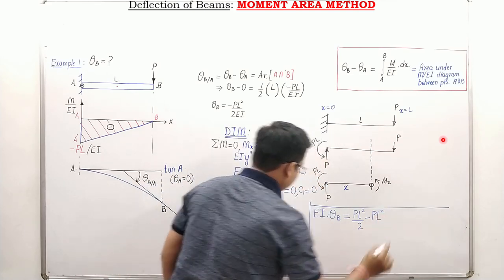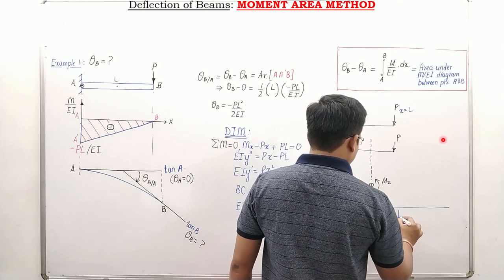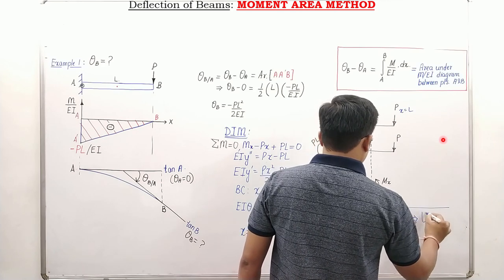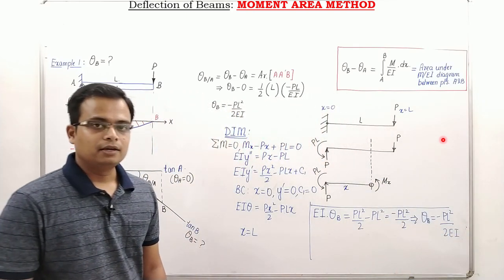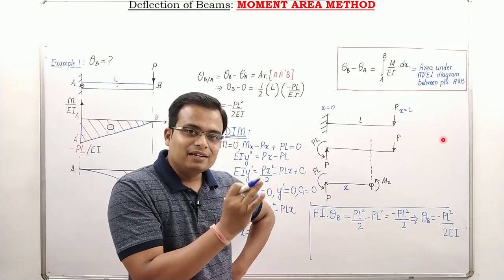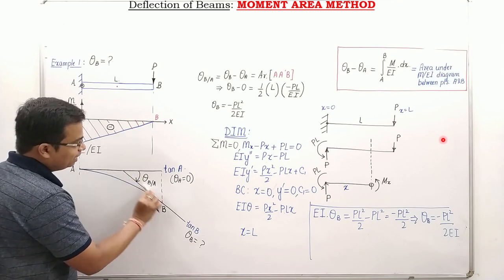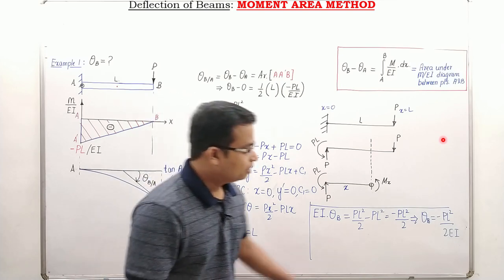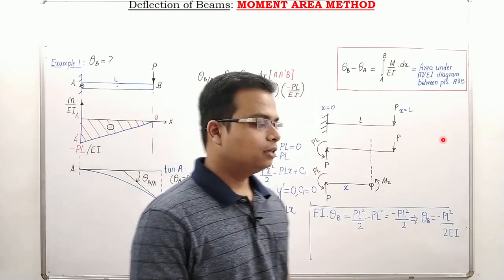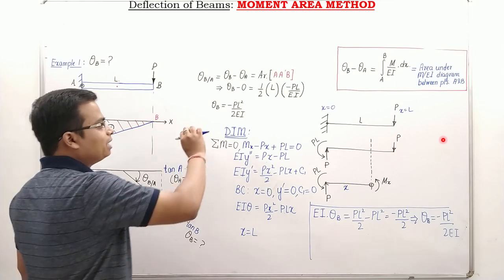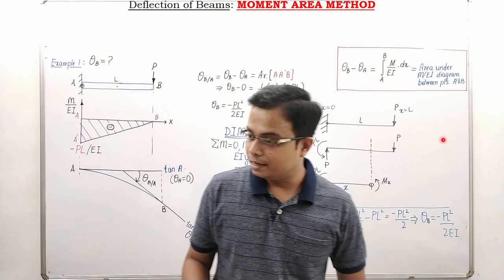So theta_B = −PL²/(2EI). The negative sign indicates that the slope is continuously decreasing in nature. This confirms that applying the moment area method Theorem 1 gives the correct slope at the free end of a cantilever beam with a point load at the free end.